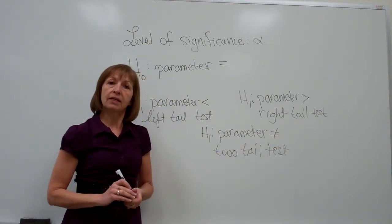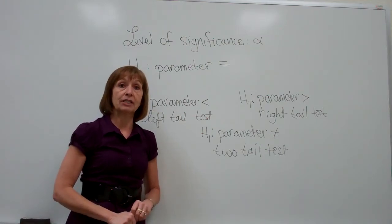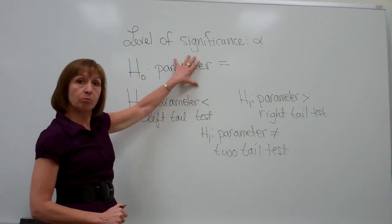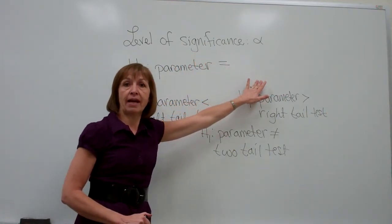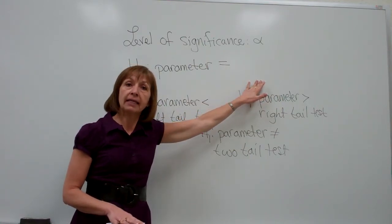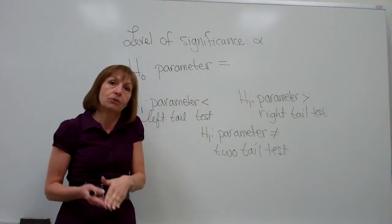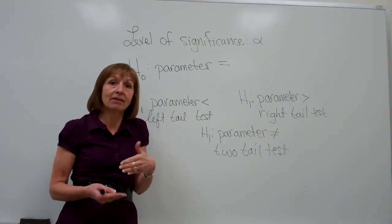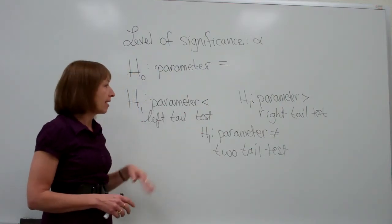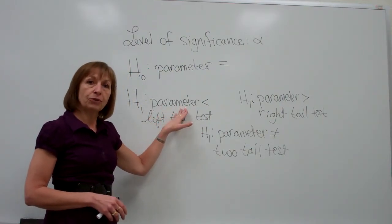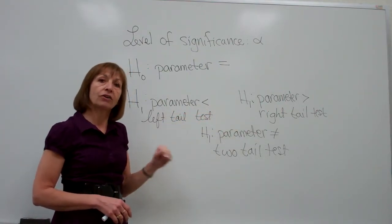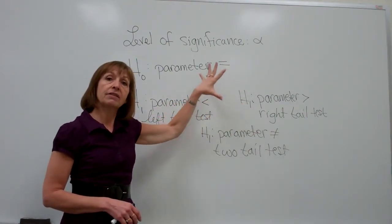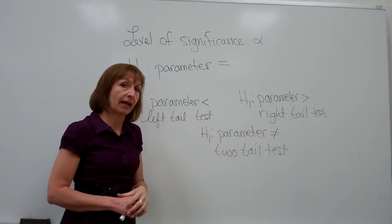For example, if we're doing a hypothesis test concerning the population mean, the parameter symbol is mu. We would have mu equal to a value in the null hypothesis, and our alternate would depend on what the test asks. If the question says to test that the population mean is less than 15, then our alternate hypothesis would be mu is less than 15, and our null hypothesis would be mu is equal to 15.